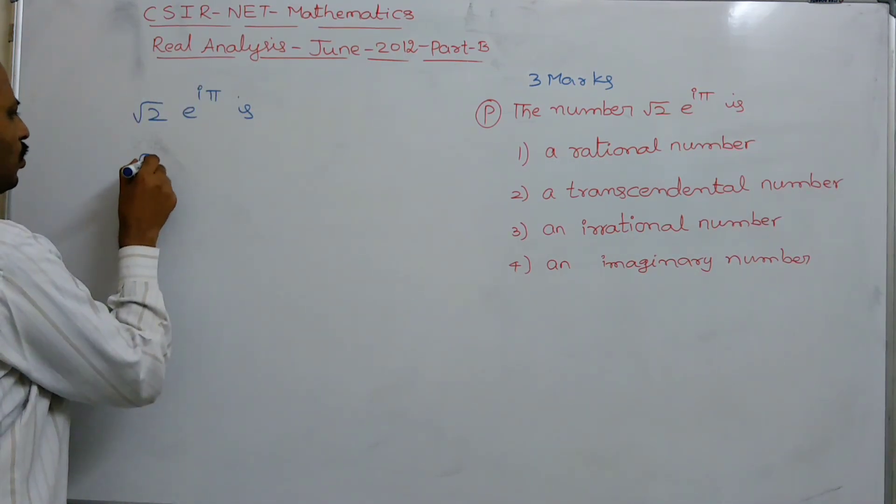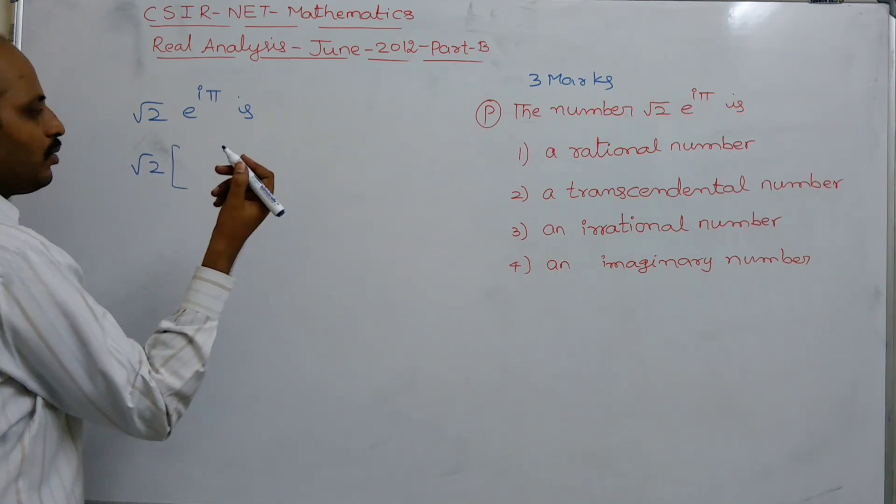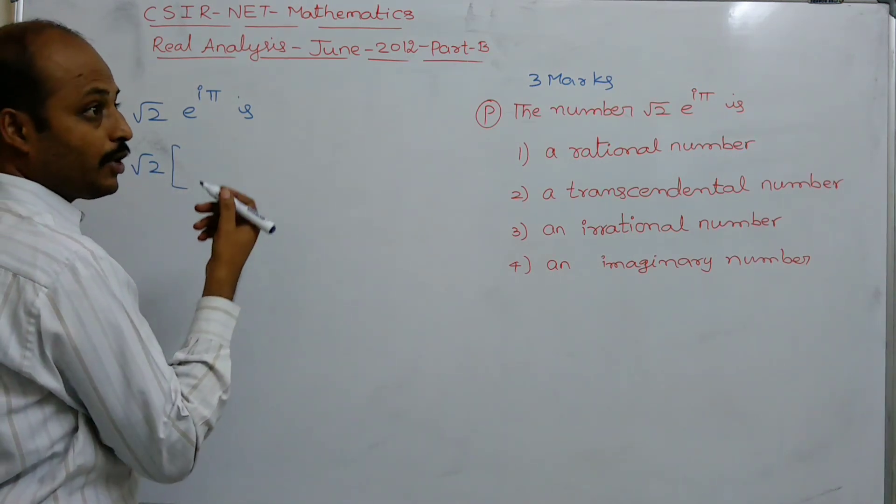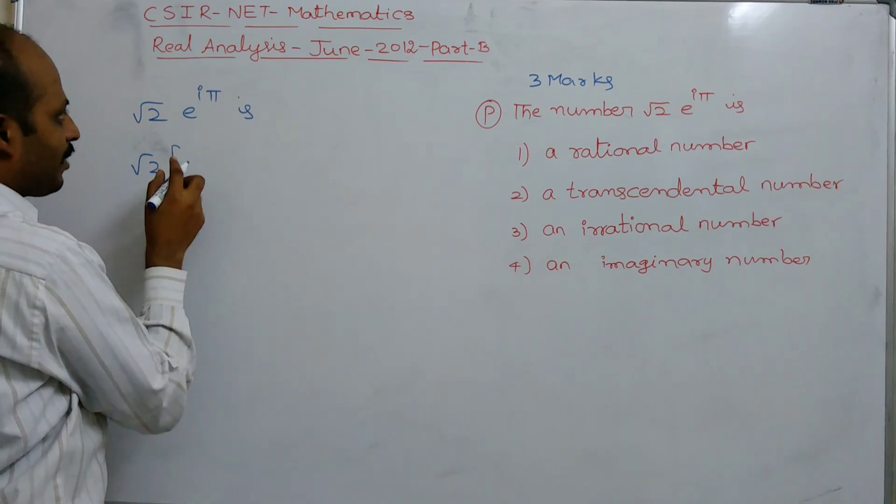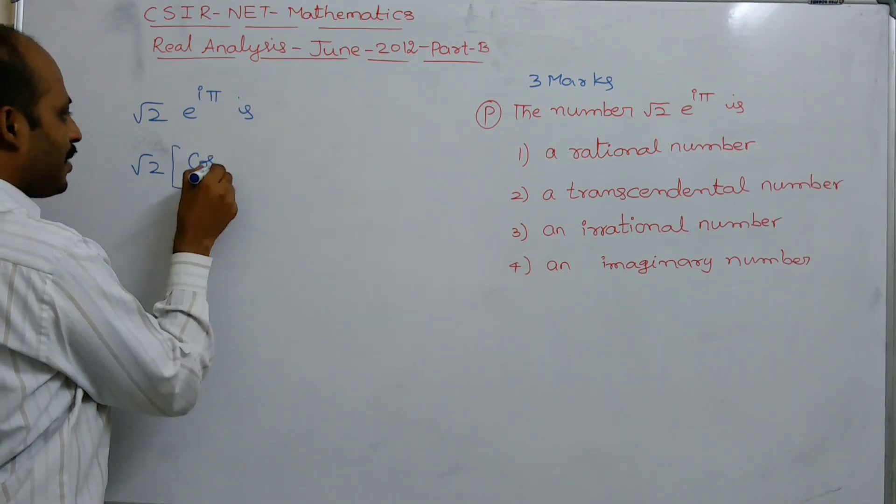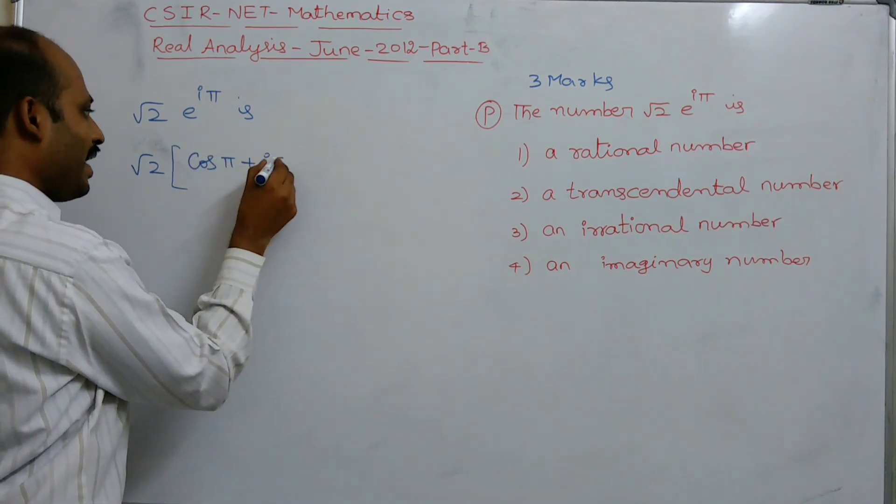It is very clear, √2 × e^(iπ). We know Euler's formula: e^(iπ) can be written as cos π + i sin π.